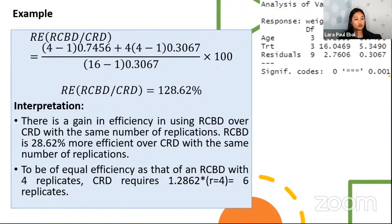Now, to be equal in terms of efficiency, we need to multiply this value, 1.2862 times the number of replicates. The blocks here, the four. So we have around six replicates. Kung mag-conduct tayo ng CRD, we need to have six replications. It will have the same efficiency with that of this RCBD.